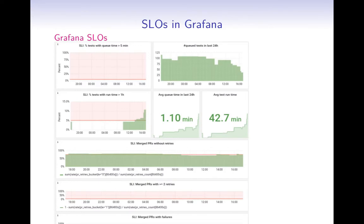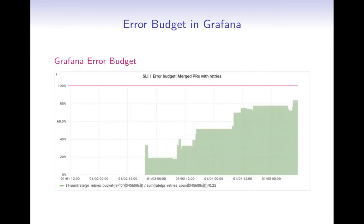We have a Prometheus instance to regularly pick up the current values and store them so we have a full history of these indicators. We also have an accompanying Grafana instance which graphs these SLIs and objectives nicely — the link to Grafana is on the slide, it's public. One important detail is the red bars, which show where the service level objective is exceeded — where the indicator starts to eat into our error budget. We also have another set of graphs showing error budget usage over the last 30 days.